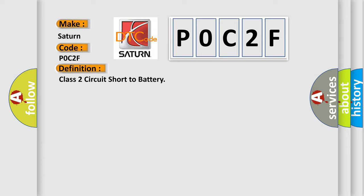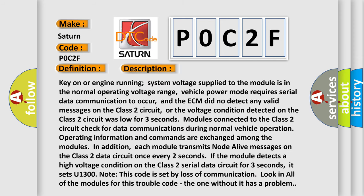And now this is a short description of this DTC code. Key on or engine running, system voltage supplied to the module is in the normal operating voltage range, vehicle power mode requires serial data communication to occur, and the ECM did not detect any valid messages on the Class 2 circuit.